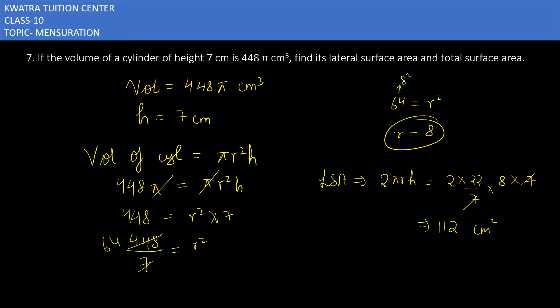Then in the last one you have to find the total surface area. So total surface area is equivalent to 2πr(r + h).